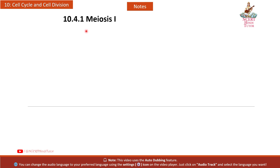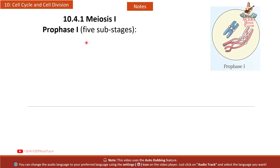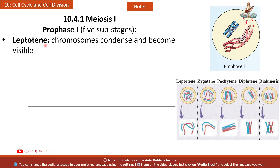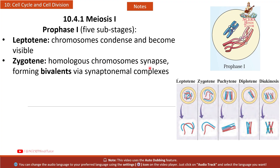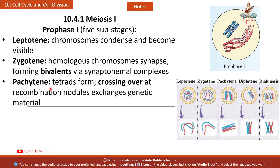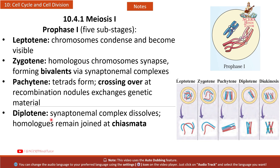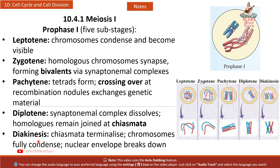10.4.1 Meiosis I — Prophase I has 5 sub-stages: Leptotene — chromosomes condense and become visible; Zygotene — homologous chromosomes synapse forming bivalents via synaptonemal complexes; Pachytene — tetrads form, crossing over at recombination nodules exchanges genetic material; Diplotene — synaptonemal complex dissolves, homologues remain joined at chiasmata; Diakinesis — chiasmata terminalize, chromosomes fully condense, nuclear envelope breaks down. A figure for the five sub-stages has been provided.